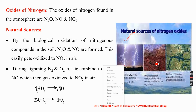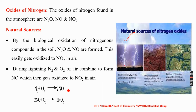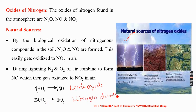Under anaerobic conditions at the bottom of rivers, algae patches and similar components can also produce oxides of nitrogen on oxidation. During lightning, nitrogen combines with oxygen forming nitric oxide, which further combines with atmospheric oxygen to produce nitrogen dioxide — this is how oxides of nitrogen are naturally formed.